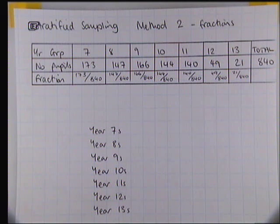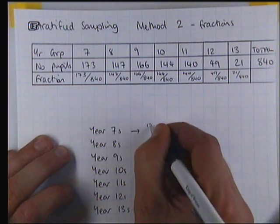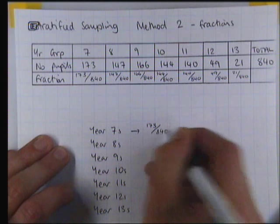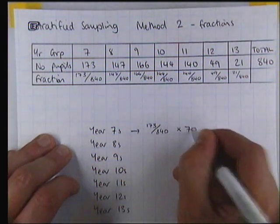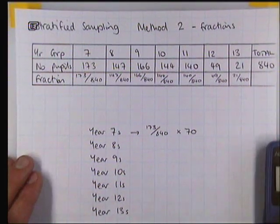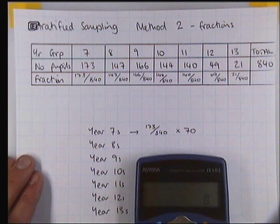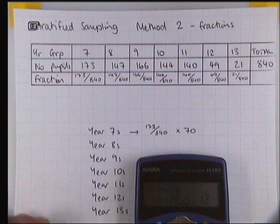I've filled in those fractions, and basically what we're going to say is the number of year sevens that we choose has got to be the same proportion, so the same fraction, but out of 70 this time, because we want to have a total number of 70 students. So the total number of year sevens that I'm going to choose is 173 out of 840 multiplied by 70, which is 14 and 5/12.